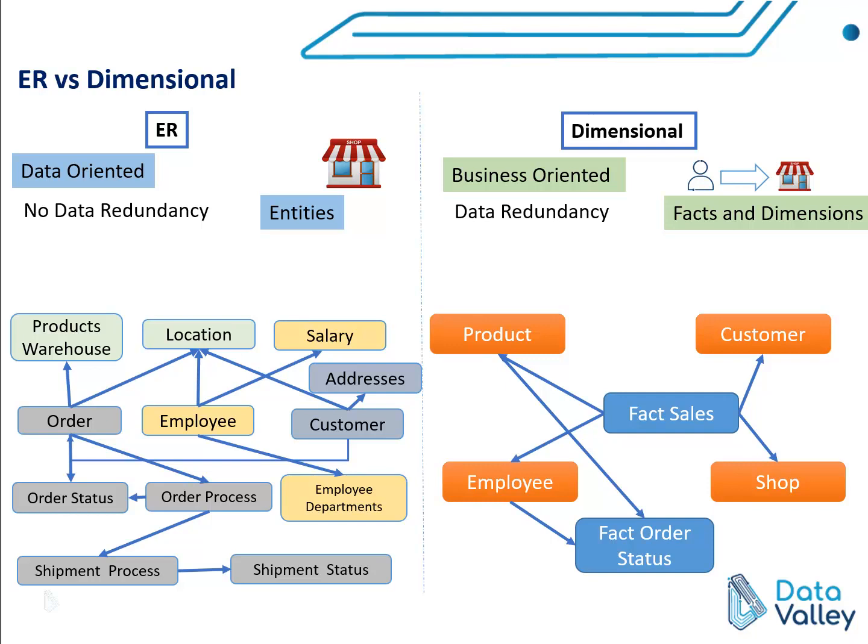In dimensional modeling we have data redundancy because the main focus is the business process, not data. If we build an employee dimension, we have one single table to represent all employee information — salary, first name, last name, and department. So we can have repeated or duplicated information in the same table. For example, if 10 employees are in the same department, that department name will be repeated 10 times inside the employee dimension table.